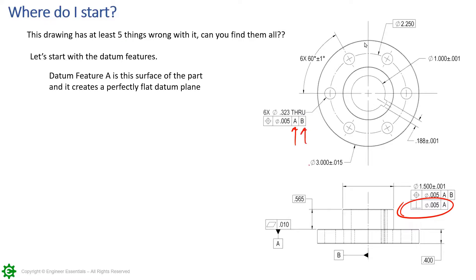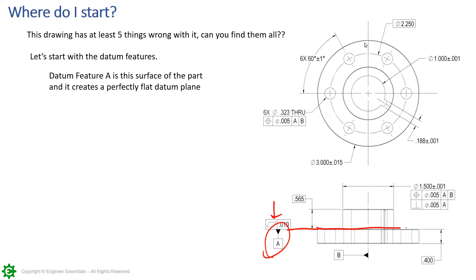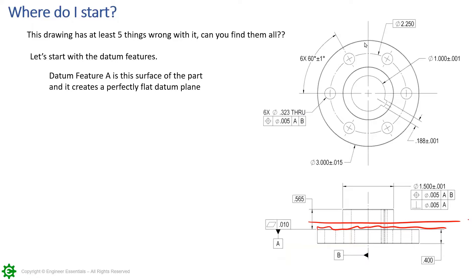We'll start with datum feature A. All the feature control frames reference A and B, so A is primary here. Datum feature A is identified with a datum feature symbol attached to a flatness callout, and that flatness is attached to this surface. So A is identifying that flat surface as datum feature A — a perfectly flat plane as a datum. The surface of the part won't be perfectly flat, but it will create a perfectly flat plane as a datum.